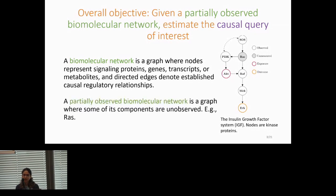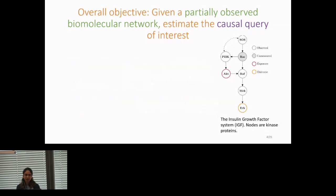A biomolecular network is partially observed when some of its components are unobserved. For example, in the context of a method like flow cytometry, RAS is unobserved because there's no antibody for it. So given this partially observed biomolecular network, the goal is to estimate the causal query of interest.